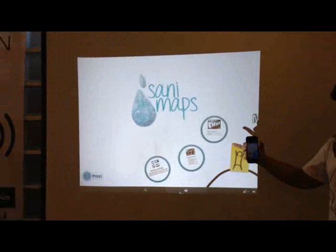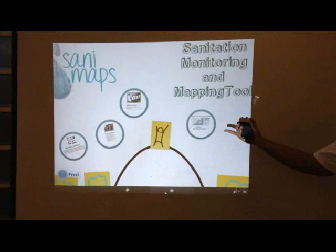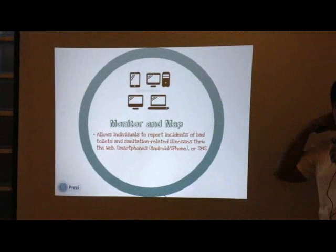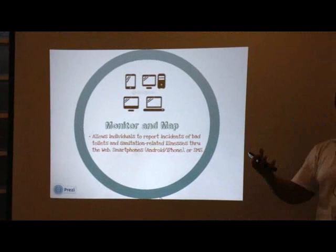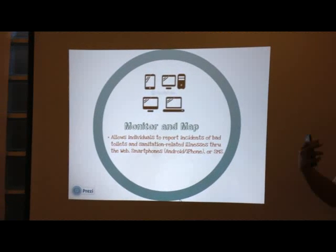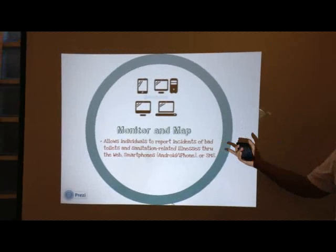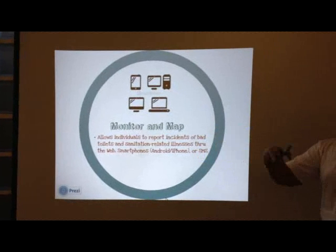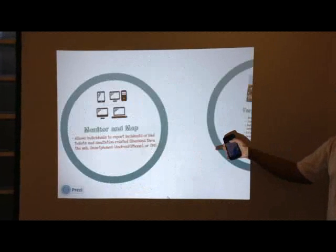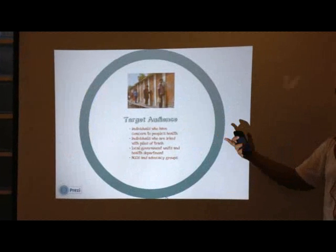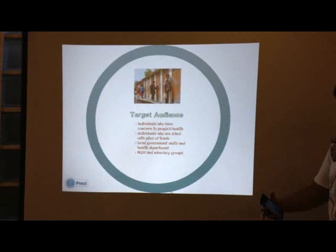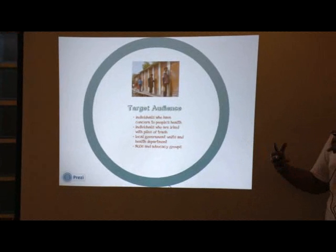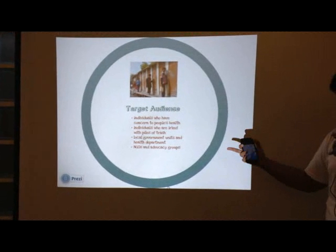More information on Sanimaps: we have here a monitor and map system. It's important to report, to have the information, and then get information from the database as well. It allows individuals to report incidents of bad toilets and sanitation, and this includes garbage and uncollected garbage. The target audience would be individuals who have concerns about people's health, individuals dealing with piles of trash, local government units, health departments, NGOs, and advocacy groups.